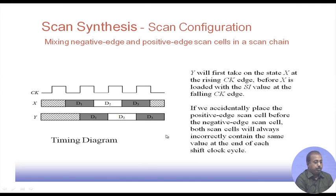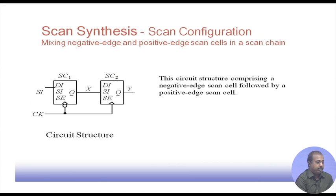If we do the reverse — placing the positive edge flip-flop before the negative edge flip-flop — then both flip-flops will always incorrectly contain the same value at the end of each shift clock cycle. When SI is given and the positive edge comes, the value is loaded into the first flip-flop, and at the negative edge that value is loaded into the second, but the second flip-flop will still continue with the previous value. So for some point in time both flip-flops will have the same value.